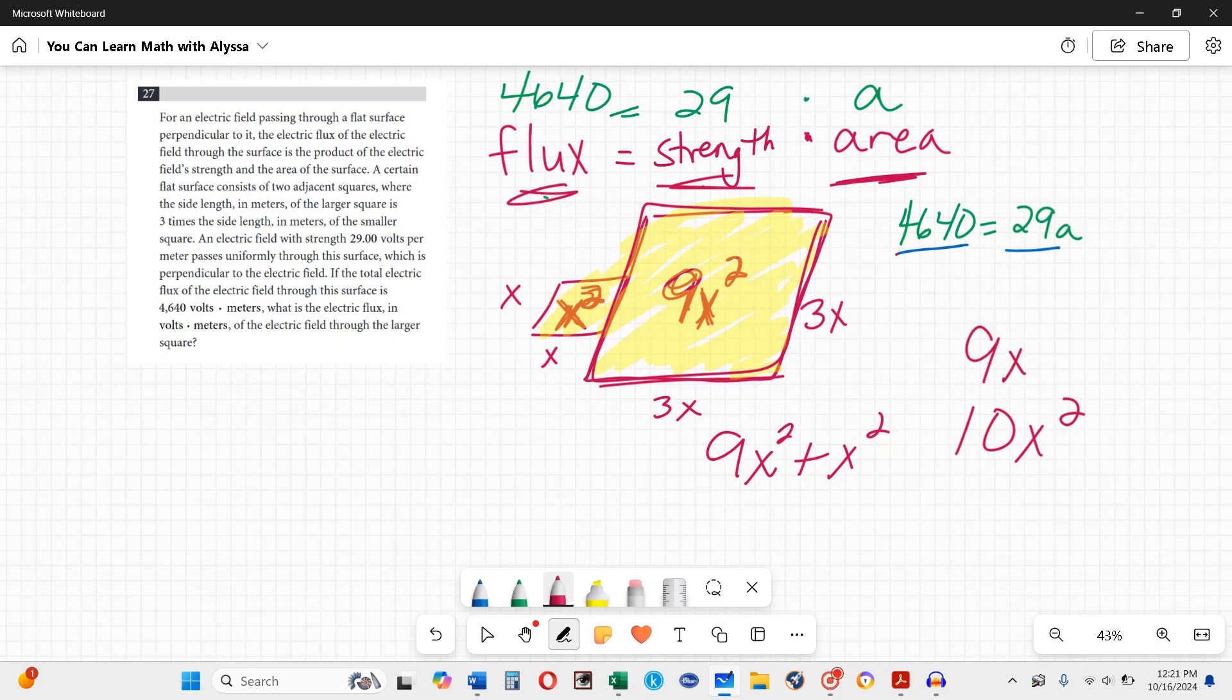Those x squared cancel and we just say it's nine tenths of the whole. So the flux would also be nine tenths of the flux. 4640 times nine tenths, or 0.9, and that will get you also 4176.